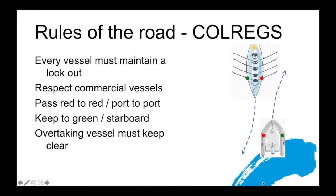Let's talk about the rules of the road. There are ColRegs — international rules for preventing collisions at sea. In the simplest terms: every vessel must maintain a lookout, and we must respect commercial vessels. Boats pass red to red — that's port to port, stroke side to stroke side. You need to keep to the green side when coming head-on, going towards bow side. And like FISA rules, the overtaking vessel must keep clear of the boat being overtaken.